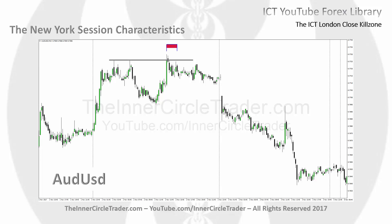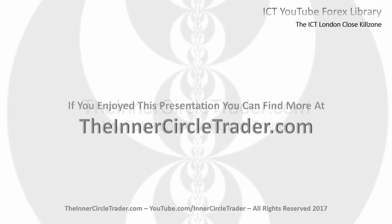We went through the Asian session, the London session, the New York session, and now we've completed the daily range with the London Close Kill Zone. We have everything at our disposal in terms of defining the daily range. That does not mean daily bias or long-term direction — it just means we've been able to define the four reference points that make up Power Three: the open, the high, the low, and the close, and the three phenomena that take place inside those price points — accumulation, manipulation, and distribution. Hopefully you found this teaching insightful. You can find more at the InnerCircleTrader.com.